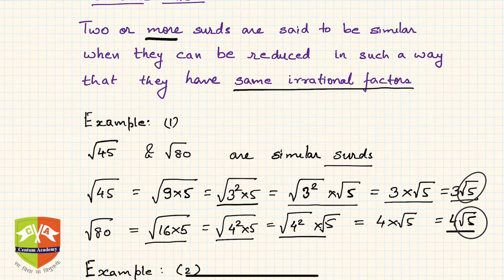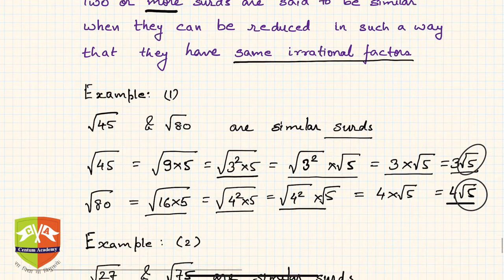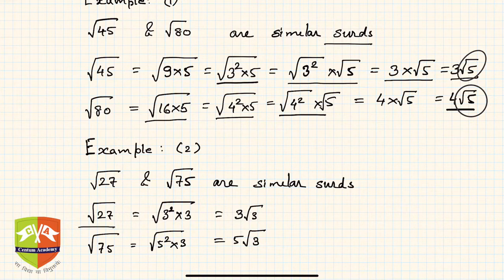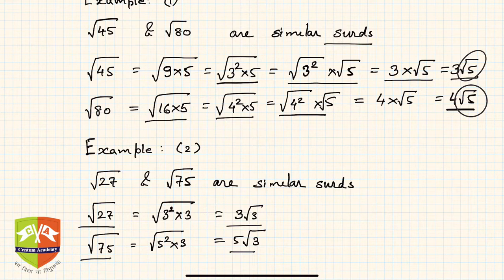The irrational parts are the same, so we say 3√5 and 4√5 are similar SIRDs. Another example: √27 and √75 are similar. Because √27 reduces to 3√3, and √75 reduces to 5√3. If you see again, the irrational part in both SIRDs is the same, so hence they are similar SIRDs.